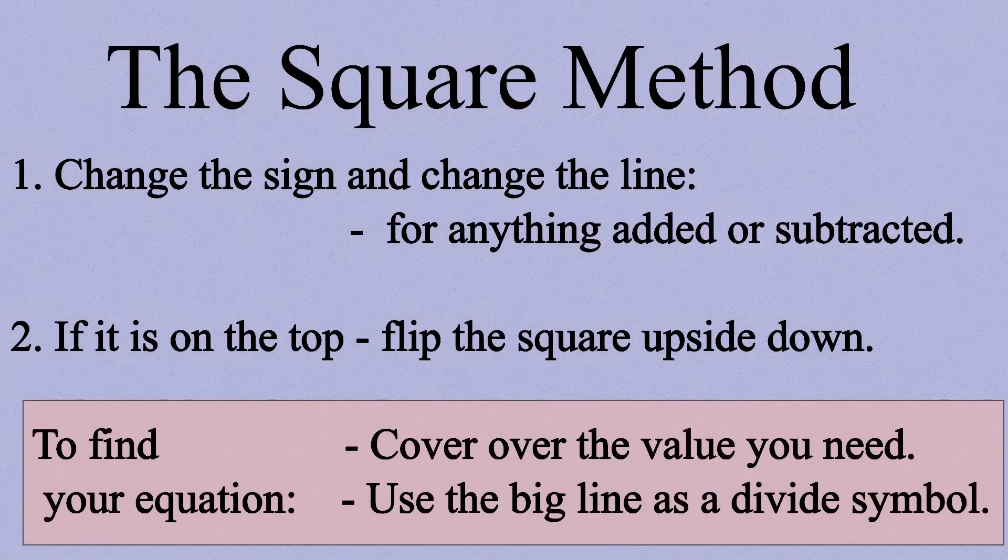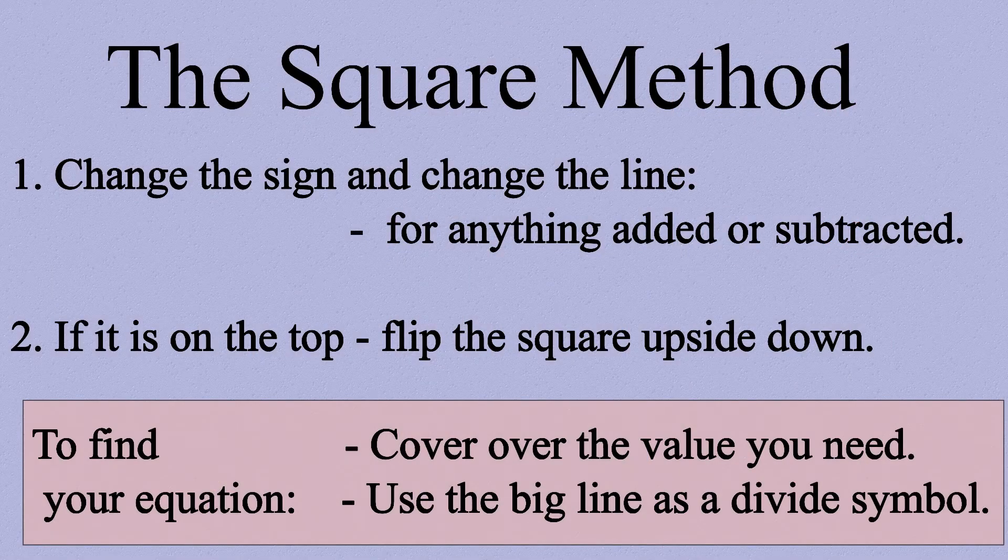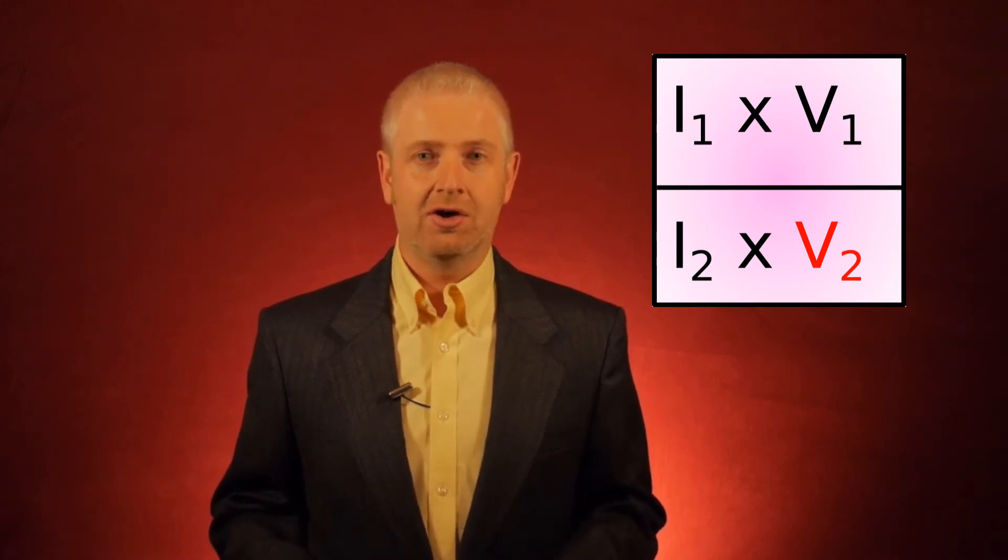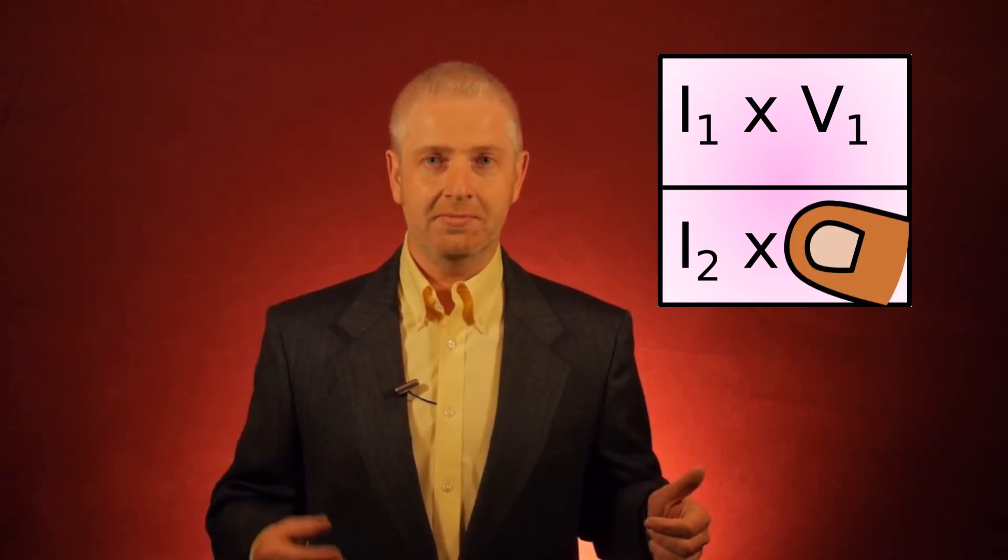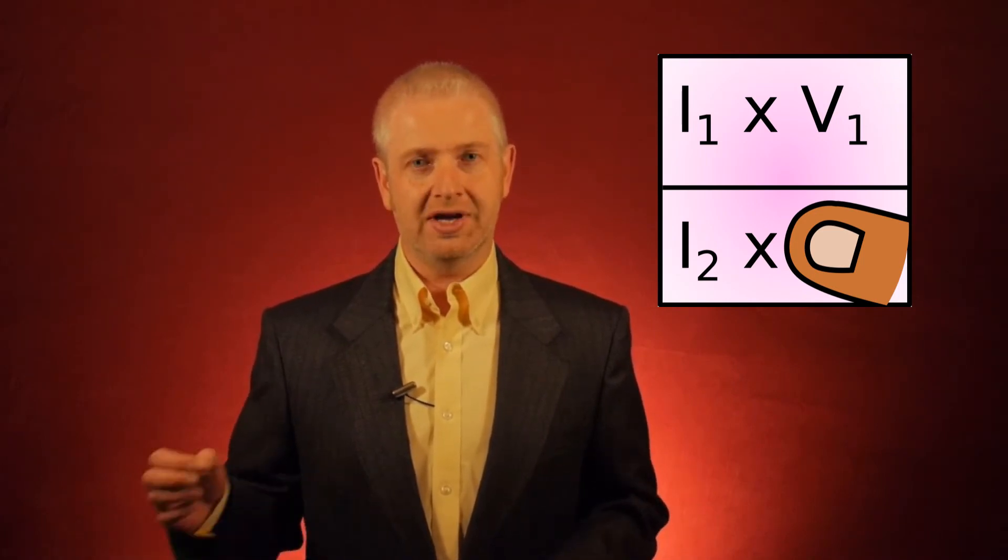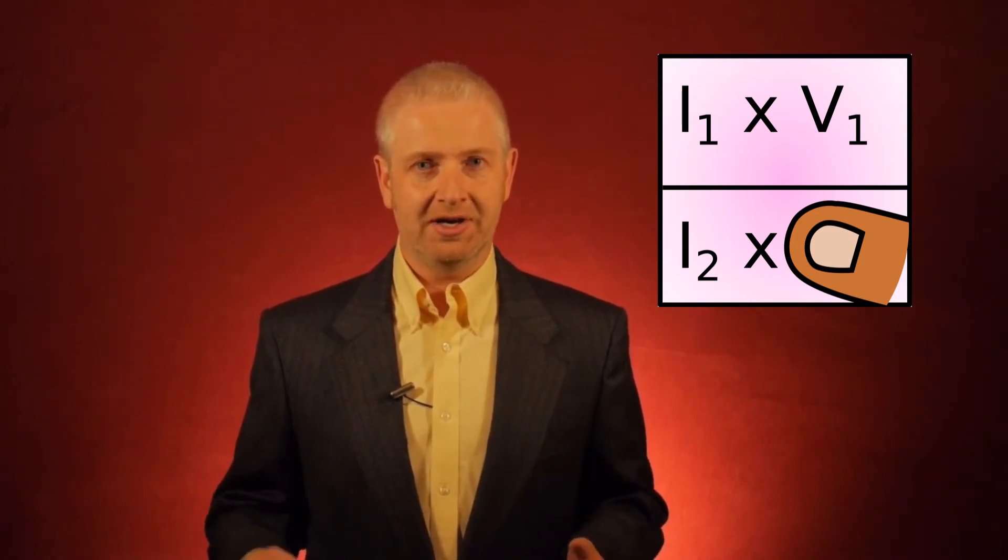Okay. Rule number two: is it on the top of the square? Nope. In which case, I'm good to go. All I do is cover it over and it immediately gives me the equation I need to use. V2 equals I1 times V1 divided by I2.